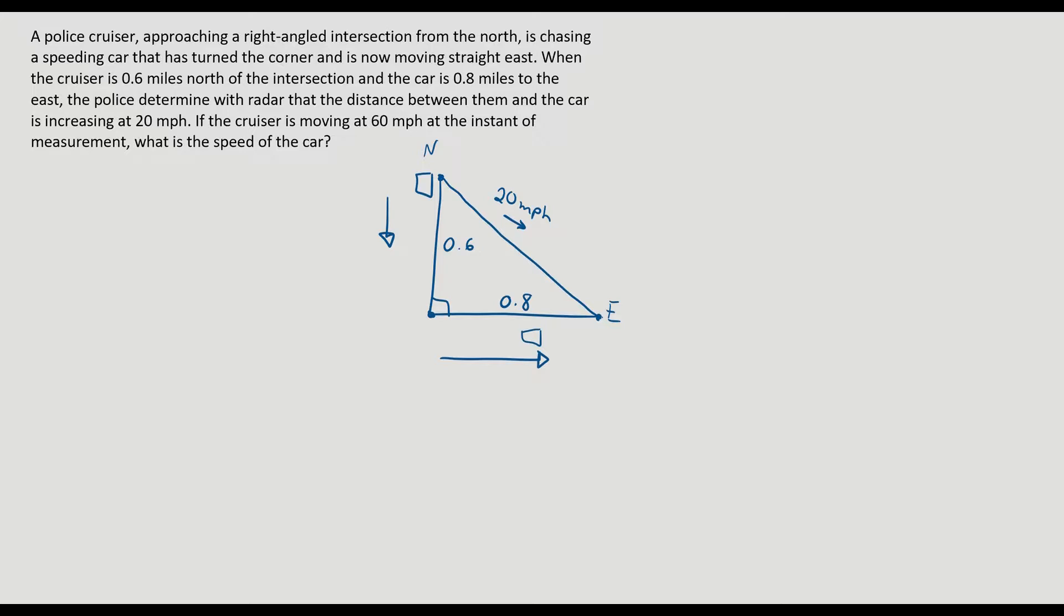If the cruiser is moving at 60 miles per hour, so the cruiser is going down 60 miles per hour. At the instance of measurement, what is the speed of the car? Okay, there's our diagram, whole lots of things going on. Now we're trying to find this x miles per hour, how fast the car is moving east.